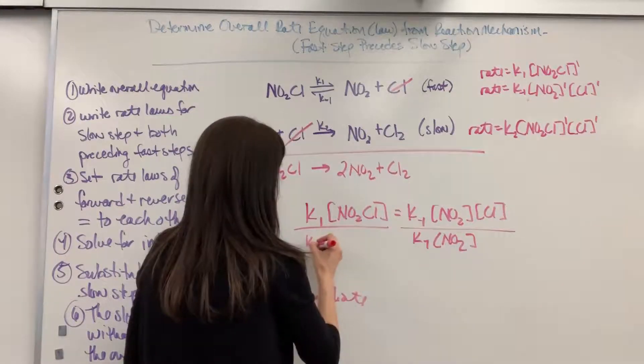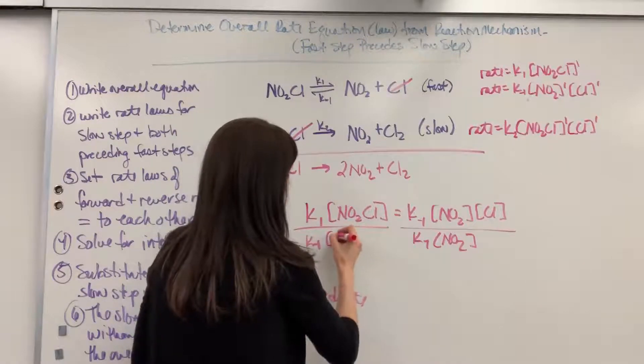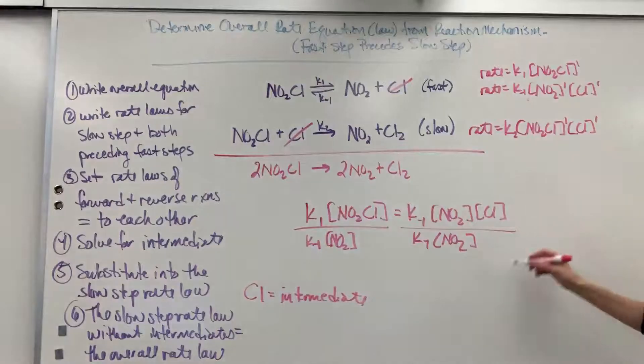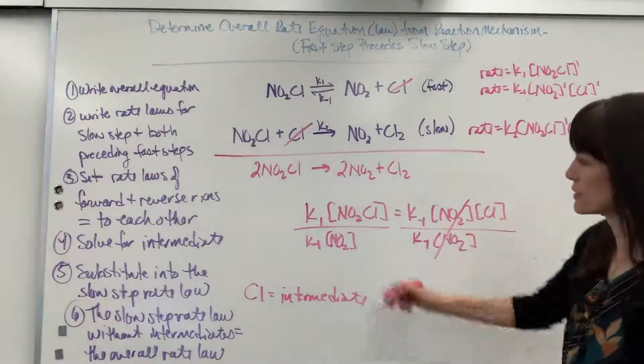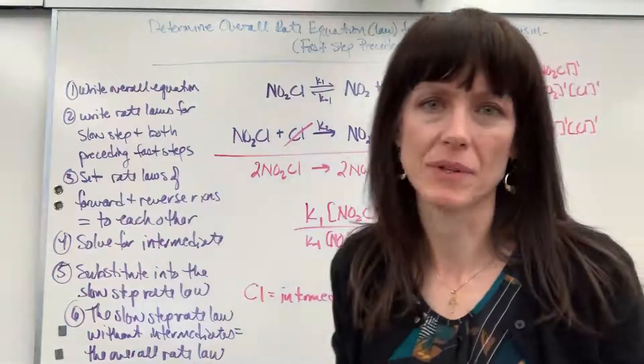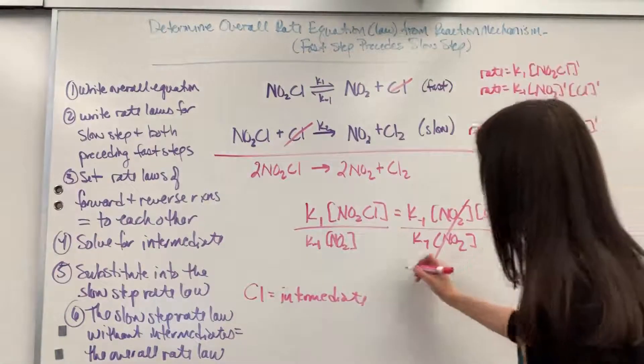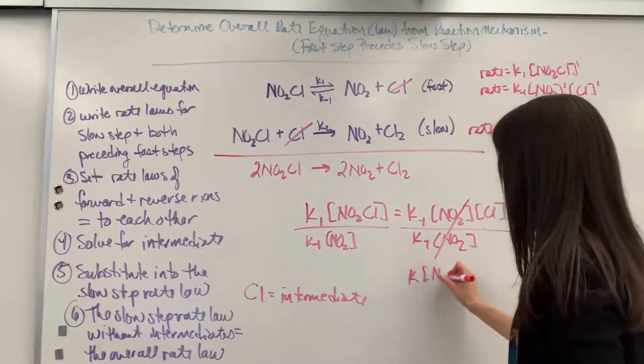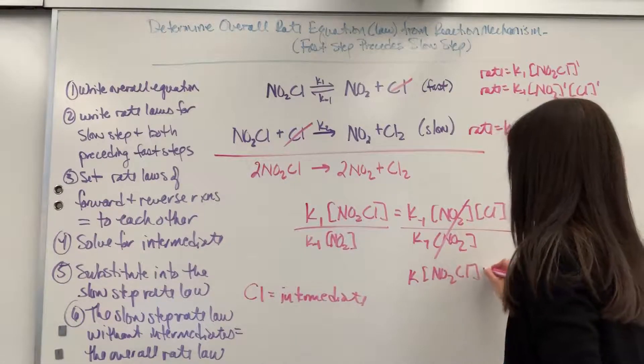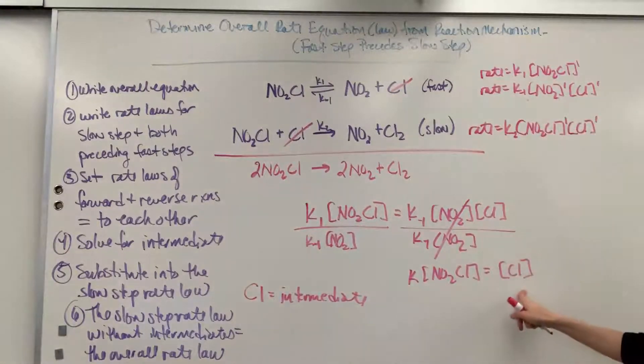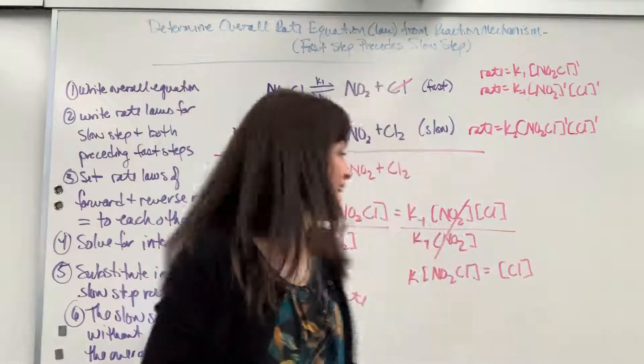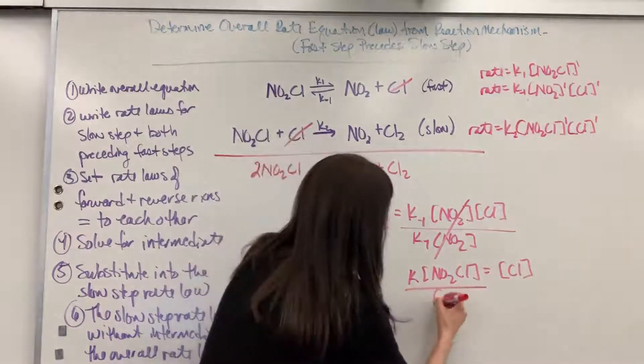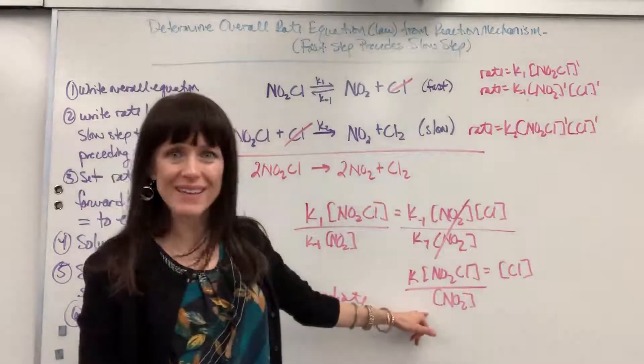Let's solve for this Cl. I'm going to divide both sides by the K minus 1 NO2. And from here, notice that cancels. The K1 and K minus 1, that's all just going to be K. So we're going to have K equals NO2Cl equals my Cl. Oh, check that out. Divided by NO2. Look at this. I found Cl.